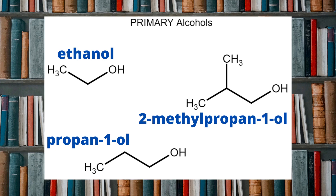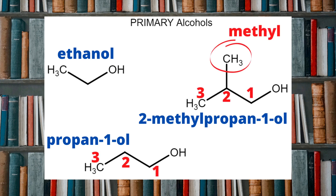The other two molecules on screen are also good examples of primary alcohols. They're drawn in a mixture between skeletal and structural formulae, but you should still be able to notice that the carbon which is directly bonded to the oxygen of the OH functional group in each of these molecules is itself only bonded to one other carbon directly, and therefore two H atoms directly.